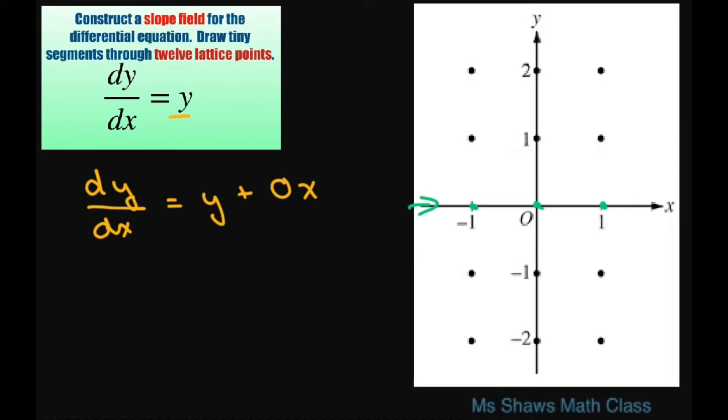So basically it's whatever your y is. Because if you let y equal 2, then you're going to get 2 plus 0 times negative 1, and it's always just going to be 0. So at 2, what we're going to get... If you go across, the slope is always going to be 2. This is your slope. So just have a 2 here.